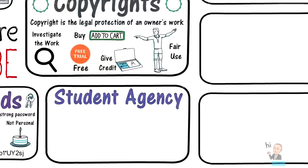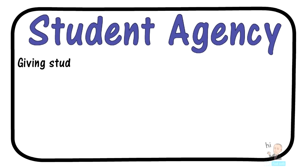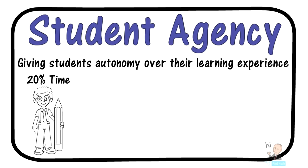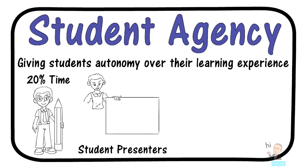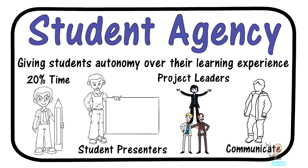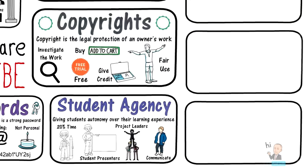Student agency is about giving students autonomy over their learning experience. One component of student agency is 20% time — the idea that if students finish all their work, they can dedicate 20% of their time to side projects. Agency is about taking ownership of their work, and one way students can do that is to present that information to the entire classroom. Students don't have to work on these projects alone; they can take on the leadership role as a project manager, rotating so all students get a chance. Ultimately, it's about developing good communication skills.